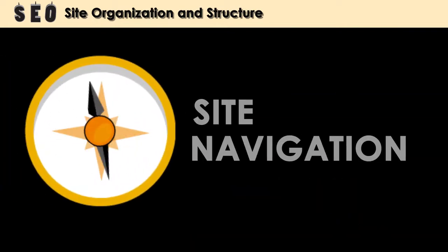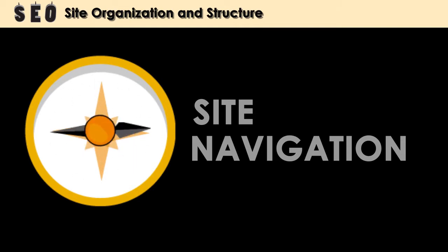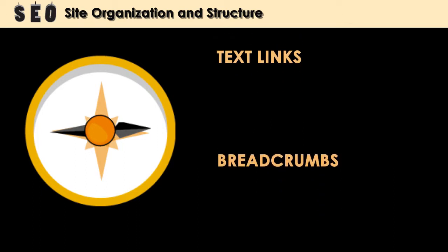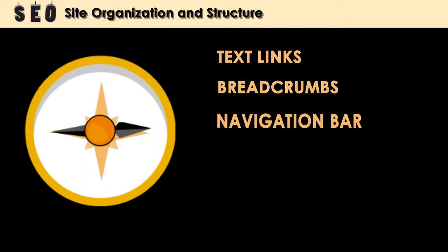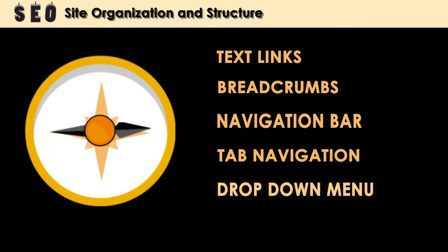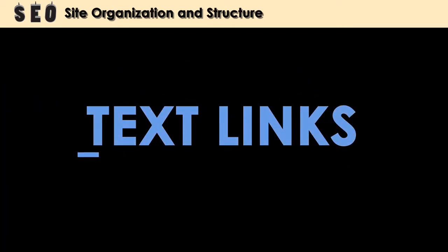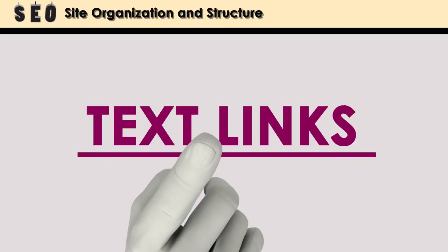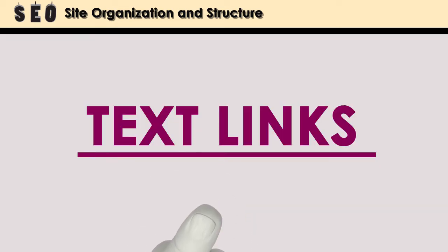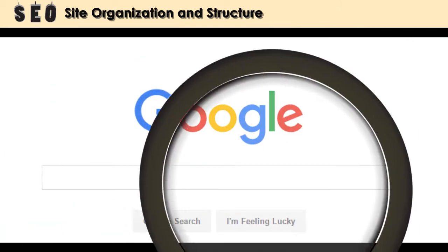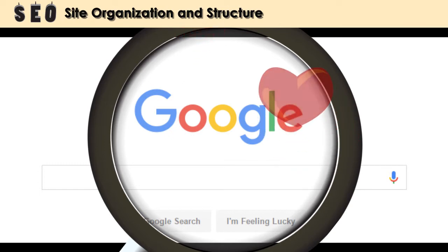Site navigation is like a roadmap for the site. Styles of website navigation include text links, breadcrumbs, navigation bar, tab navigation, drop-down menus, and named anchors. Text links, for example, create clickable text that take you to another webpage within a site. These are great for easy navigation and for accessibility. And here's another added bonus: search engines love them. Search engines analyze the link structure of a site and find shortcuts, called site links.